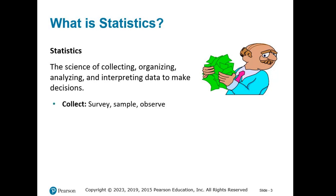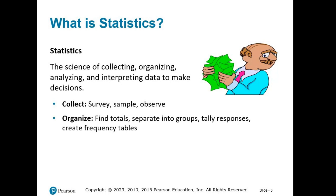Let's look closer at each one as it relates to statistics. Collect: collecting refers to the physical gathering of information, like distributing surveys, collecting samples, or observing experiments. Once the collection is done, we begin to organize all of this raw information. Organizing is really the grunt work part of the wheel, sorting everything out into their respective groups and tallying up the number of responses within each class.